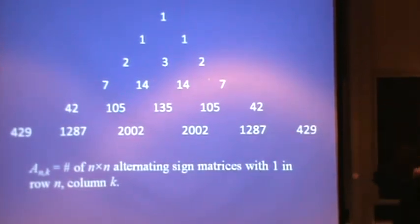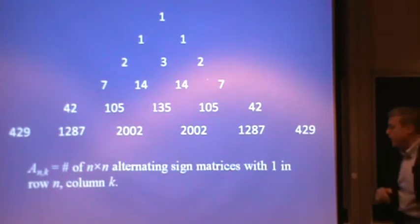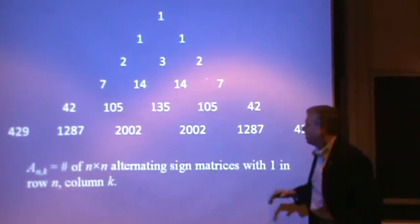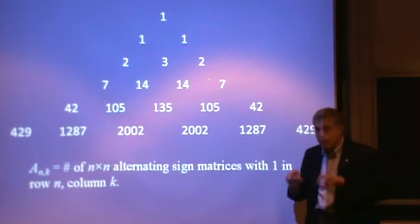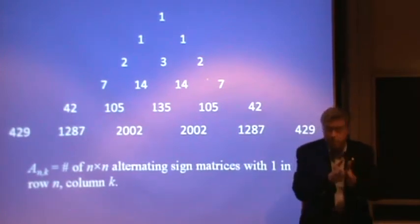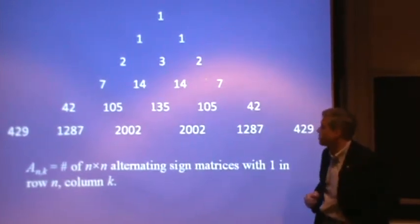You're missing that k from the second row from the bottom in the monotone triangle, which means effectively you've got one in the bottom row, the kth position of your alternating sign matrix.